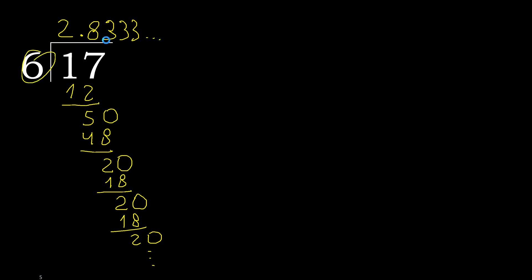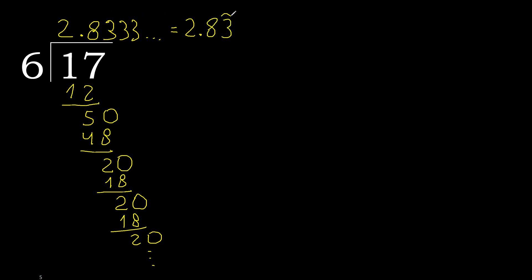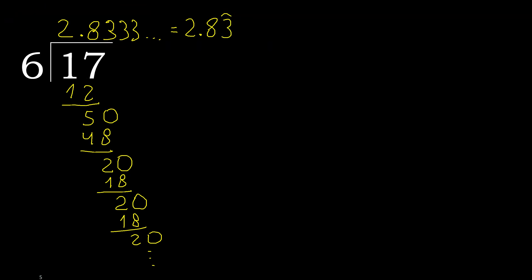17 divided by 6 is 2 — and after the decimal point, 3 repeats. Repeat, repeat — after the point, 3 repeats like this. The answer is 2.833... repeating. Finish it. 18, 2.